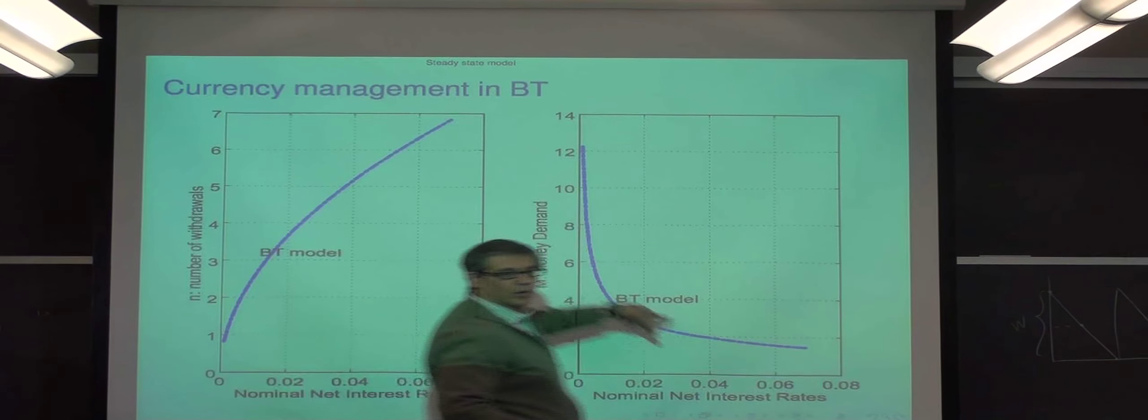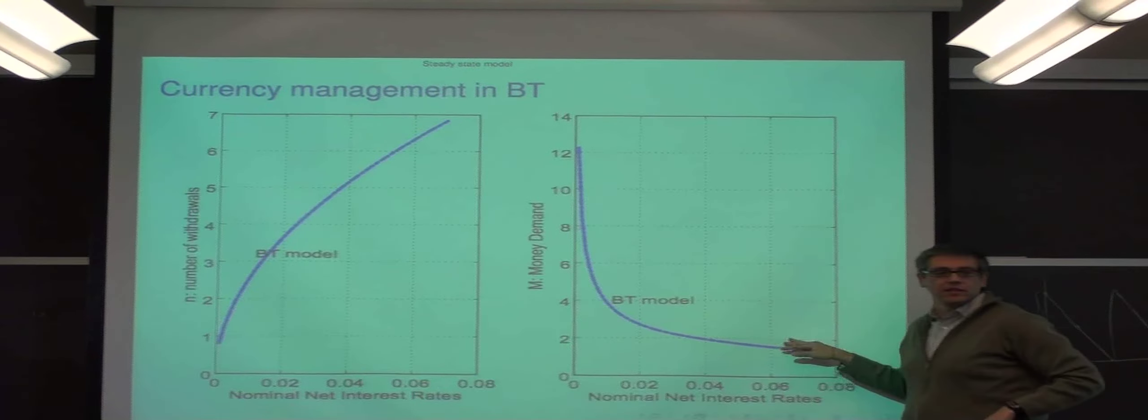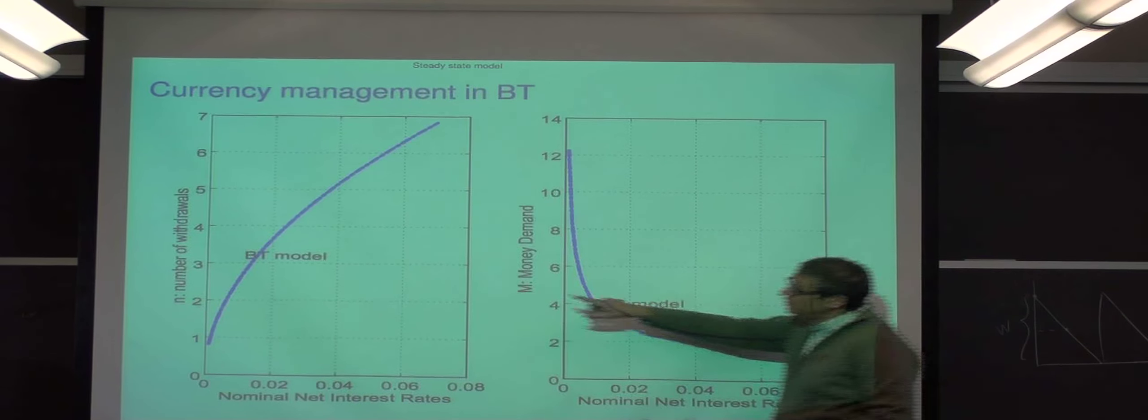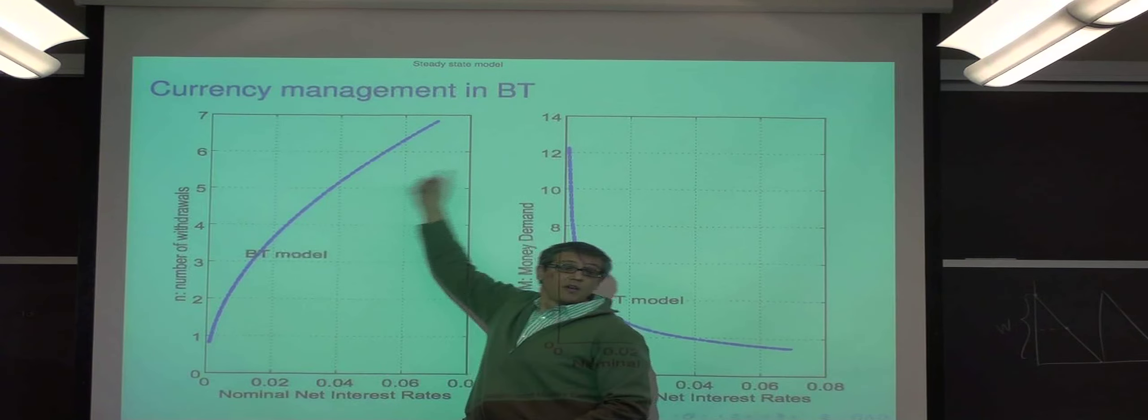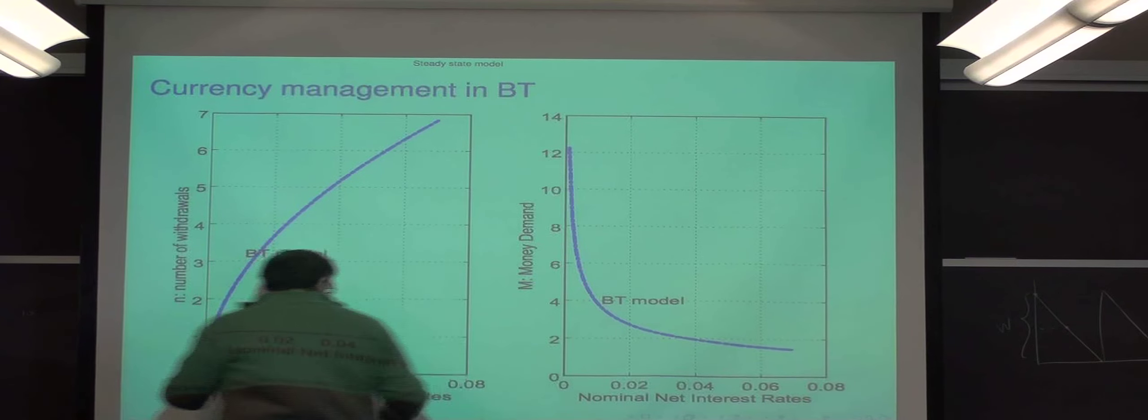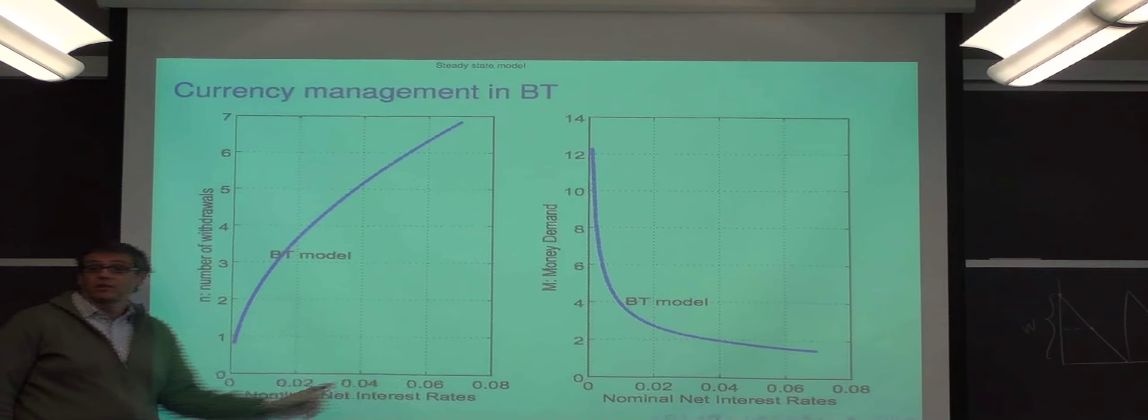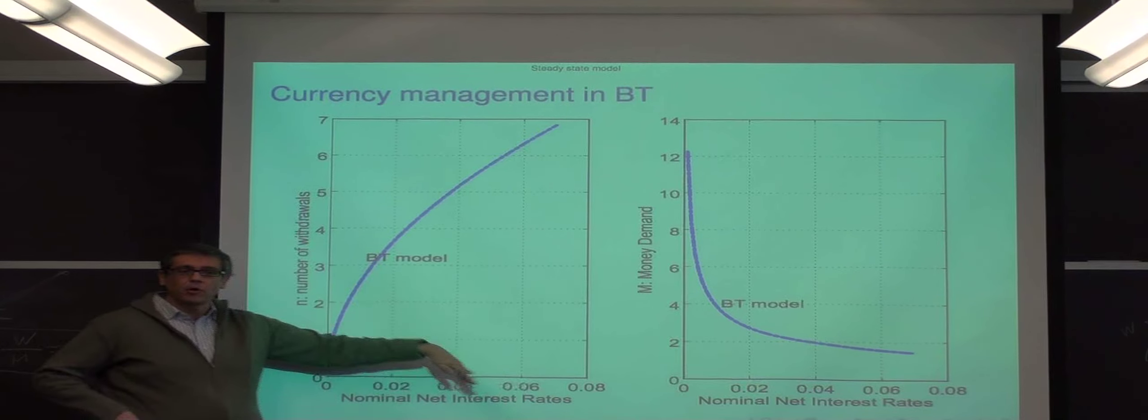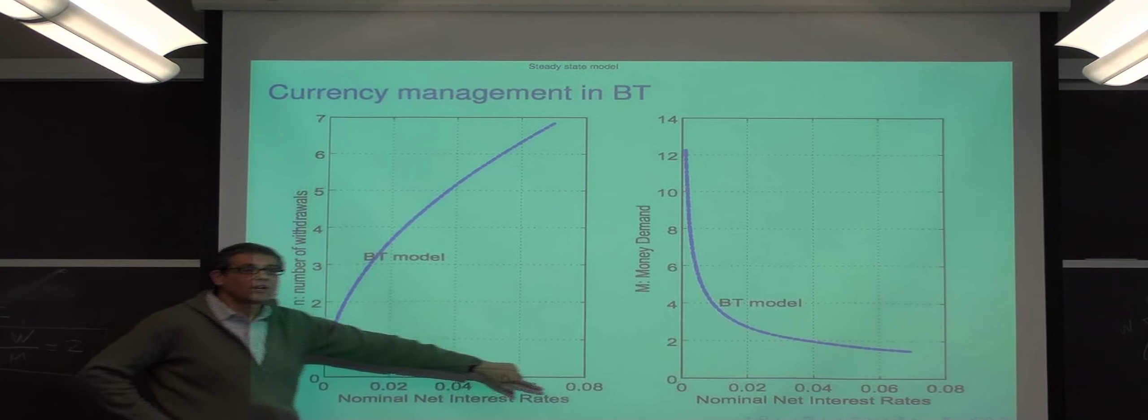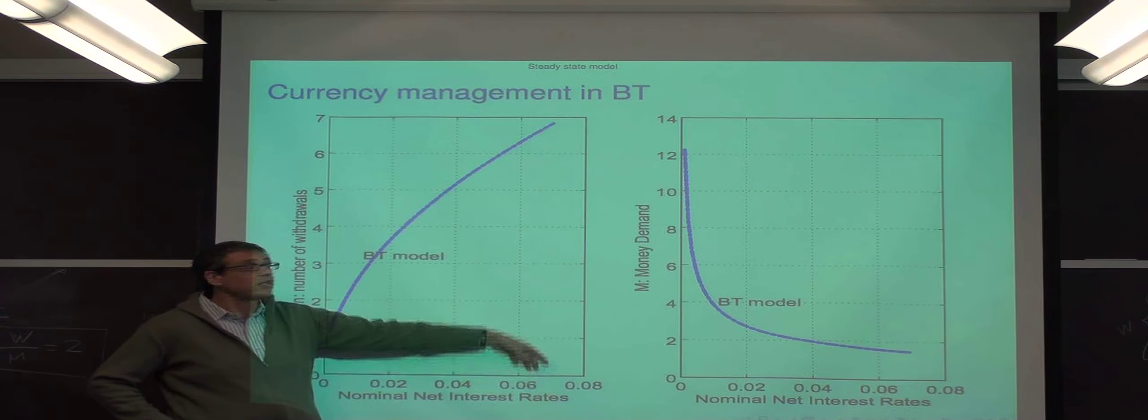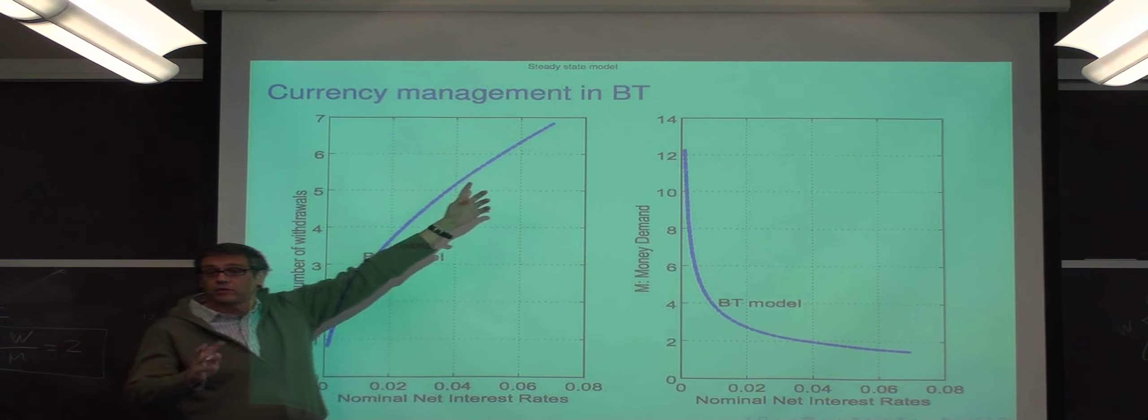So this is Baumol-Tobin, the well-known picture with the money demand with elasticity of one-half, and this is also a square root formula for the number of trips. What's on the axis is the opportunity cost, the interest rate. As you increase the interest rate in Baumol-Tobin, what do you do? For a very high interest rate, it costs you to have a lot of money, so you make a lot of withdrawals. You trade off the two types of costs.